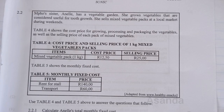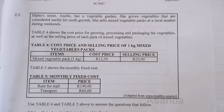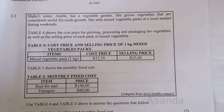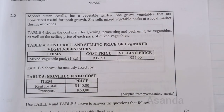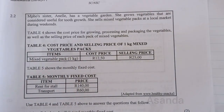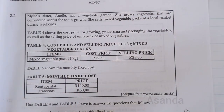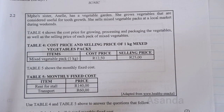Question 2.2: Mpo's sister Anele has a vegetable garden where she grows vegetables useful for tooth growth. She sells mixed vegetable packs at a local market during weekends. Table 4 shows the cost price for growing, processing, and packaging the vegetables, as well as the selling price of each pack of mixed vegetables.